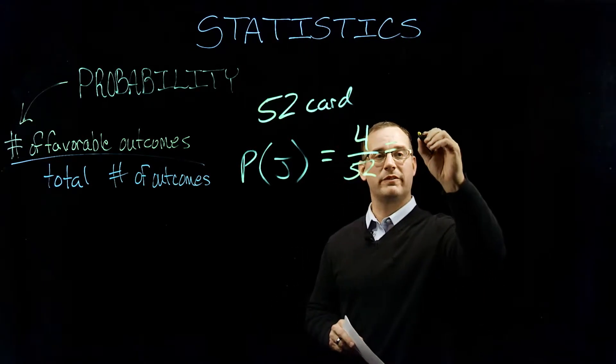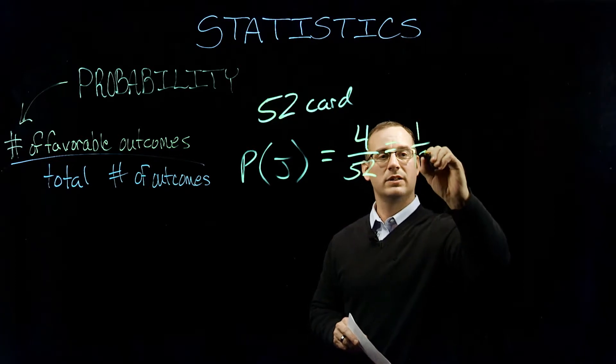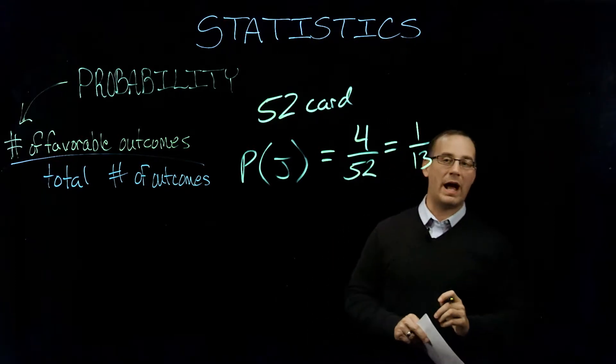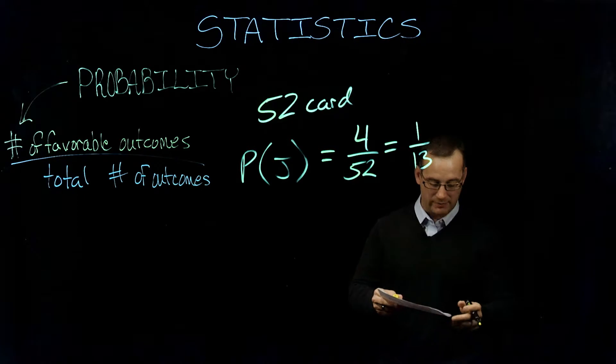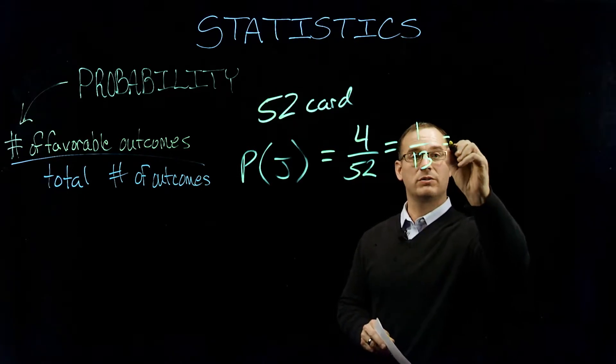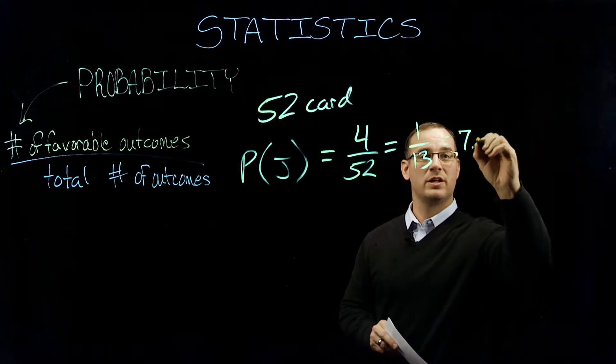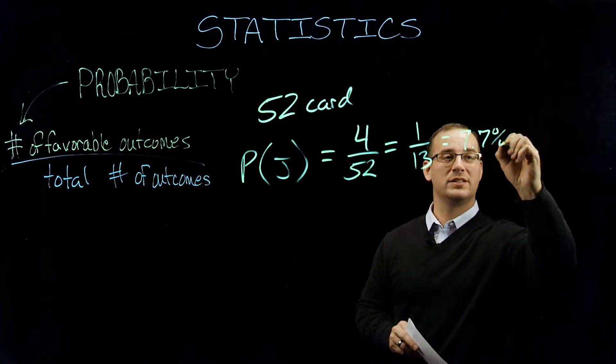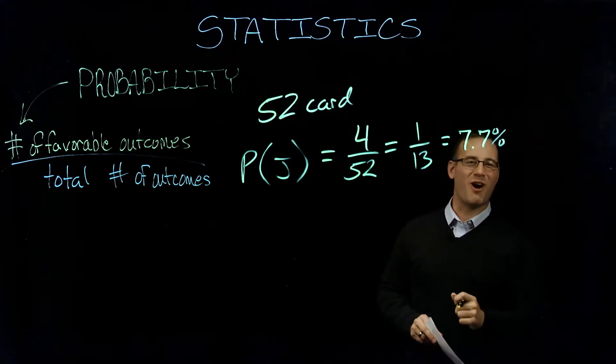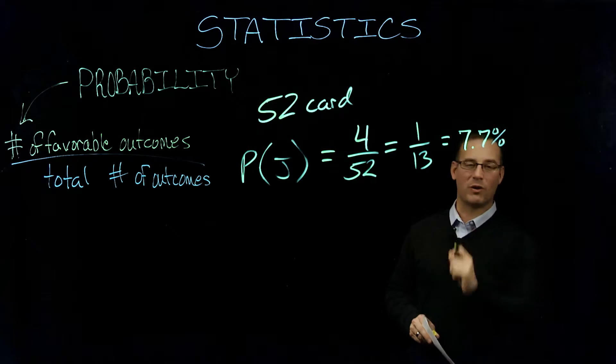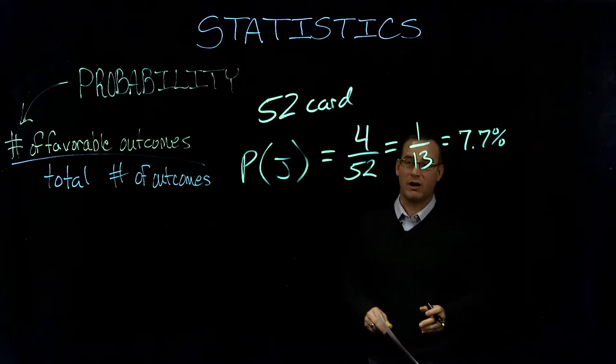So simplified, that's going to equate down to one out of 13, or we can also write that as a percentage. We're going to get 7.7% of the time we're going to draw one of those jacks, four out of 52.